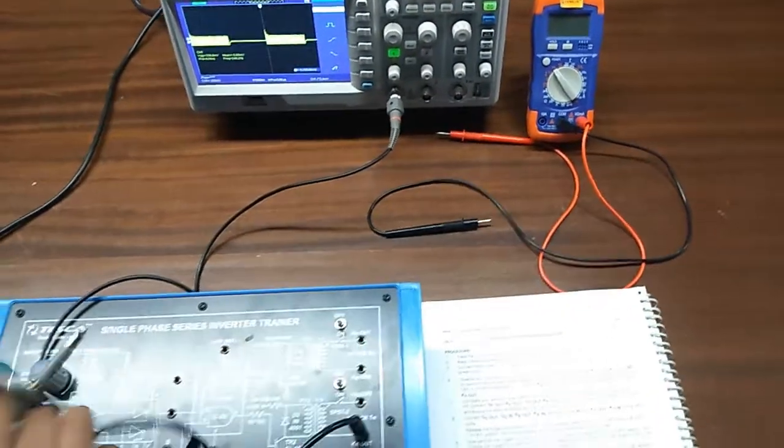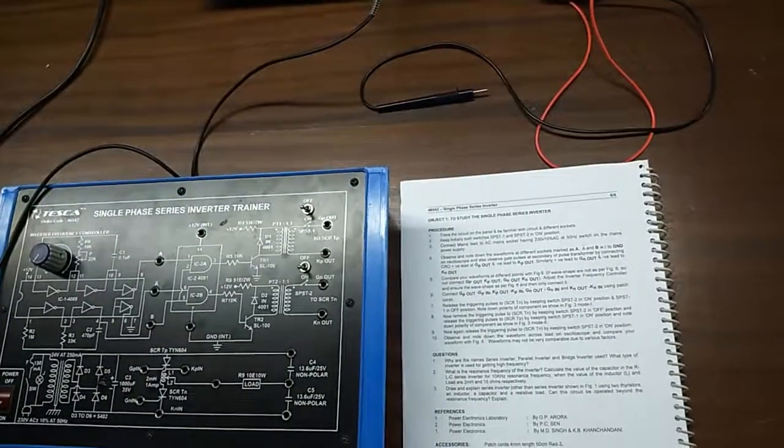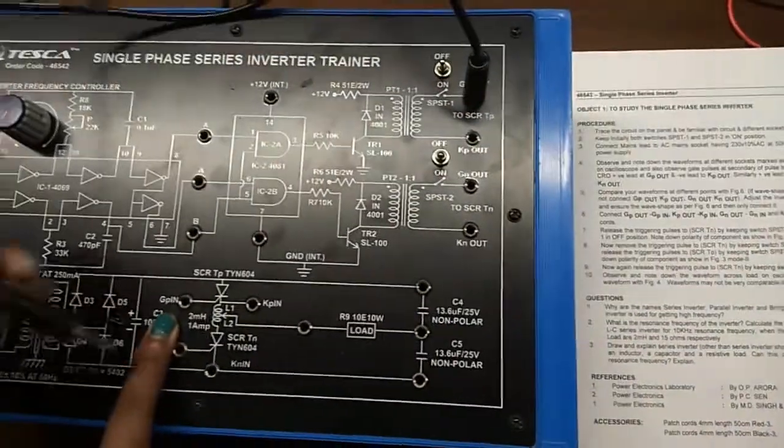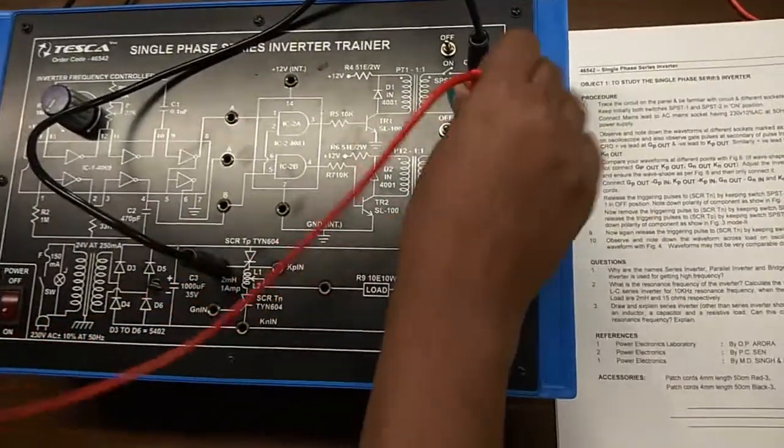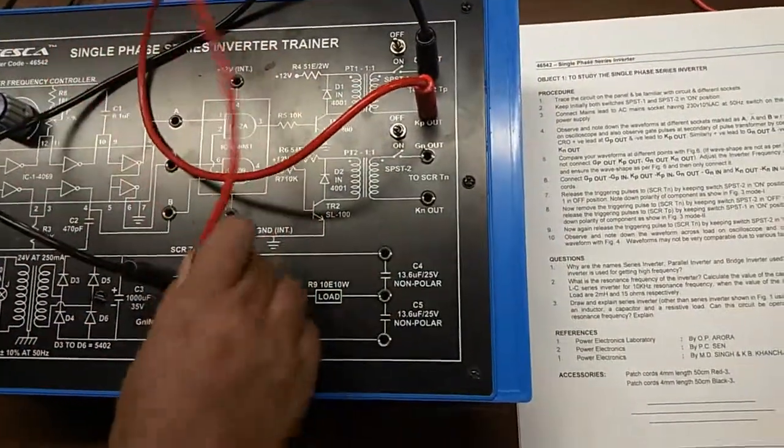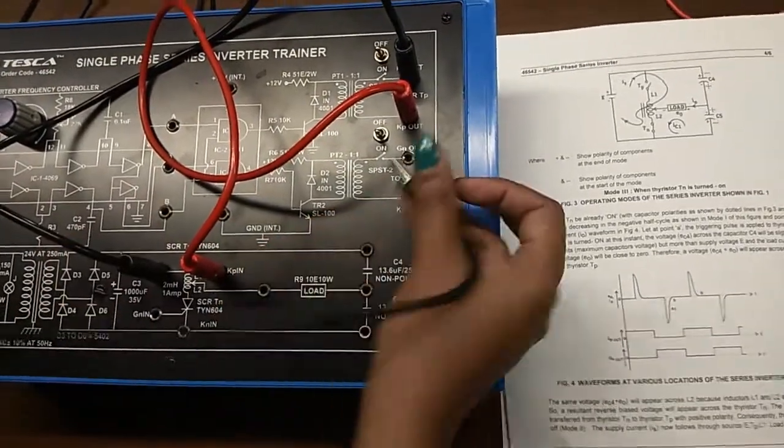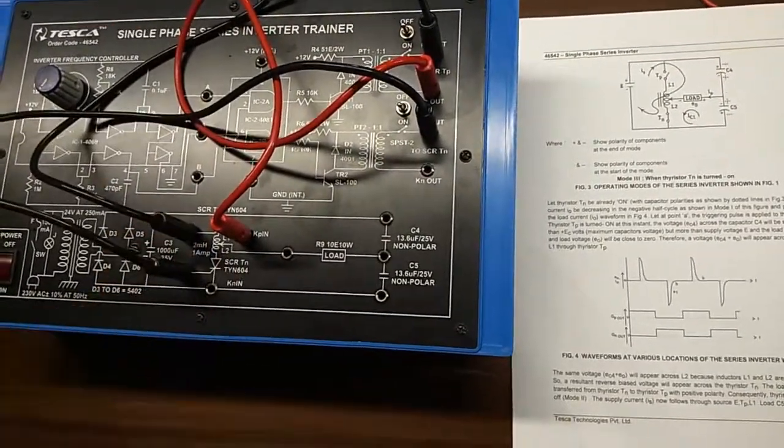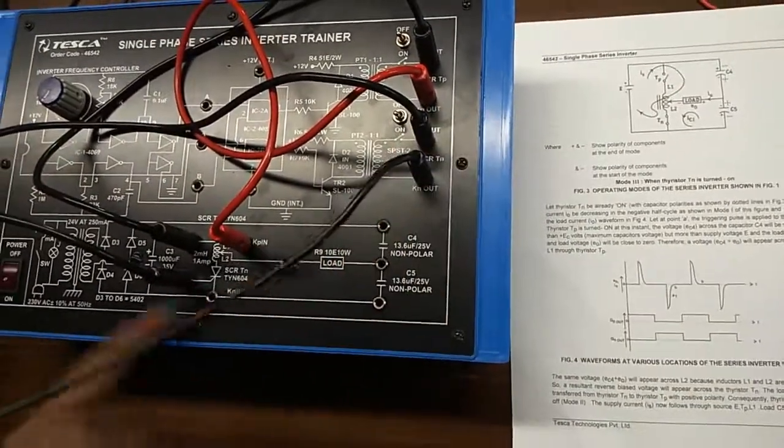Now we will connect GP out with GP in, KP out with KP in, Gn out with Gn in, and Kn out with Kn in.